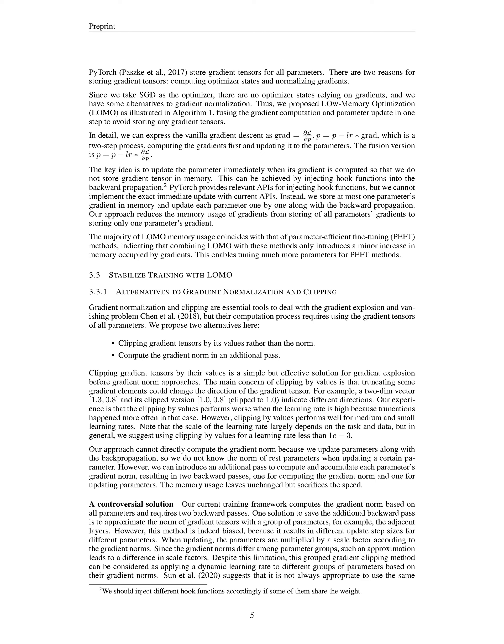The section proposes two alternatives to gradient normalization and clipping: clipping gradient tensors by their values rather than the norm, and computing the gradient norm in an additional pass. Clipping by values is effective for gradient explosion but may change the direction of the gradient tensor, and performs well for medium and small learning rates. Computing the gradient norm in an additional pass sacrifices speed but leaves memory usage unchanged.